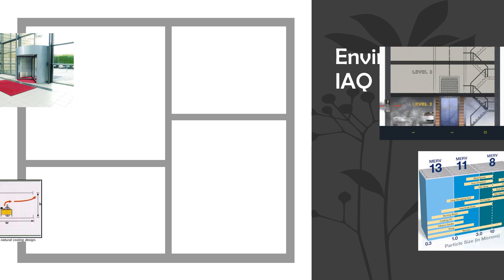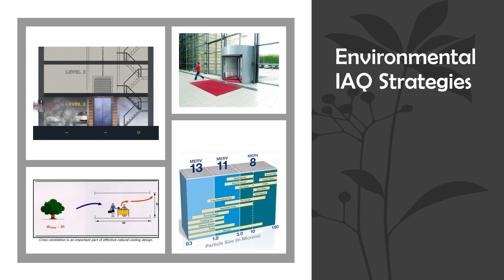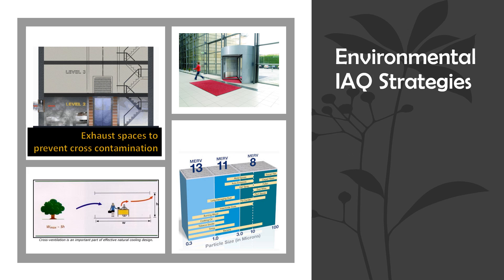What are the strategies? First, you can install entryway systems that are at least 10 feet long to capture dirt entering the buildings. Second, you can exhaust each space where there are hazardous gases — like garages and coffee rooms — by creating a negative pressure between those spaces and the surrounding spaces.